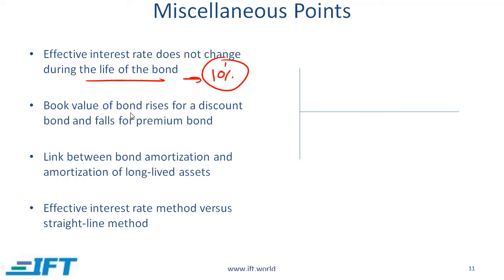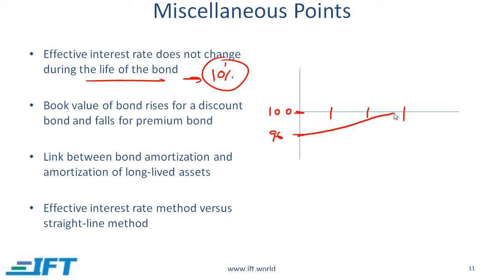The book value of a bond rises for a discount bond and falls for a premium bond. If we look at a timeline where this value represents par, and I issue a discount bond, will I issue it at a price of 100, more than 100, or less than 100? It will be less than 100. Let's say for simplicity I issue the bond at 96 — this is a discount bond and a three-year bond. Over the three-year period, the value of the bond on my books will rise to 100.